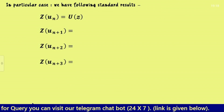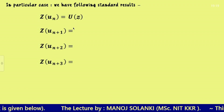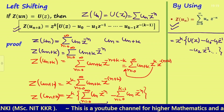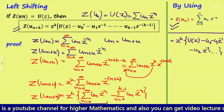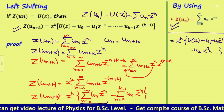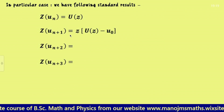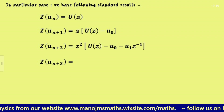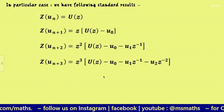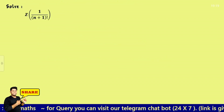Before moving to a question, let's note the standard results. If Z{u(n)} = U(z), then by left shifting with k=1: Z{u(n+1)} = z·U(z) − u(0). With k=2: Z{u(n+2)} = z²·U(z) − z·u(0) − u(1). With k=3: Z{u(n+3)} = z³·U(z) minus the corresponding terms. These are the standard results you can also derive from the generalized formula.